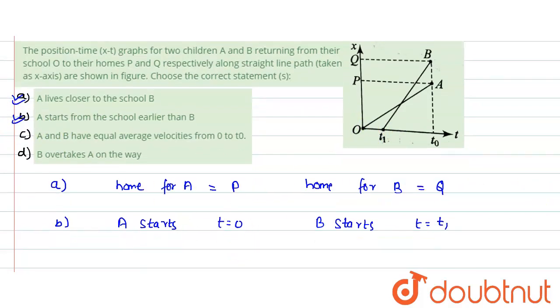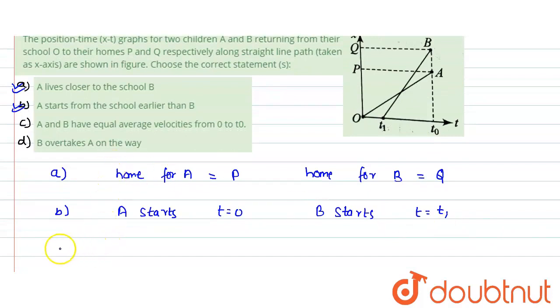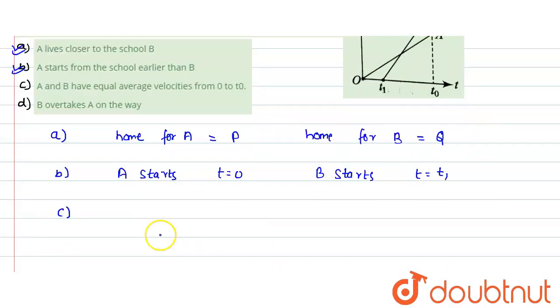Now in the C option, it is saying that A and B have equal average velocity from zero to t0. So average velocity, we say that average velocity would be equals to total displacement upon total time. Now the time for both is same. It is equals to t naught, so time is same.